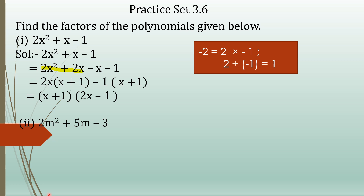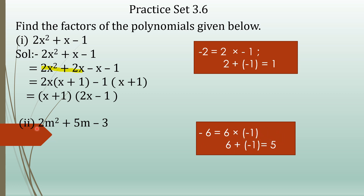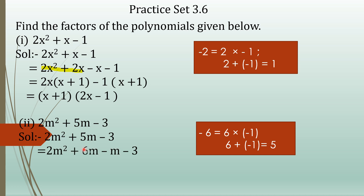Now students we move to the second question: 2m² plus 5m minus 3. The product of the coefficient of the first term and the constant term is 2 into minus 3 equals minus 6. The factors of minus 6 are 6 and minus 1, since 6 into minus 1 is minus 6, and their sum 6 plus minus 1 equals 5, matching the middle term coefficient. So write: 2m² plus 6m minus m minus 3.